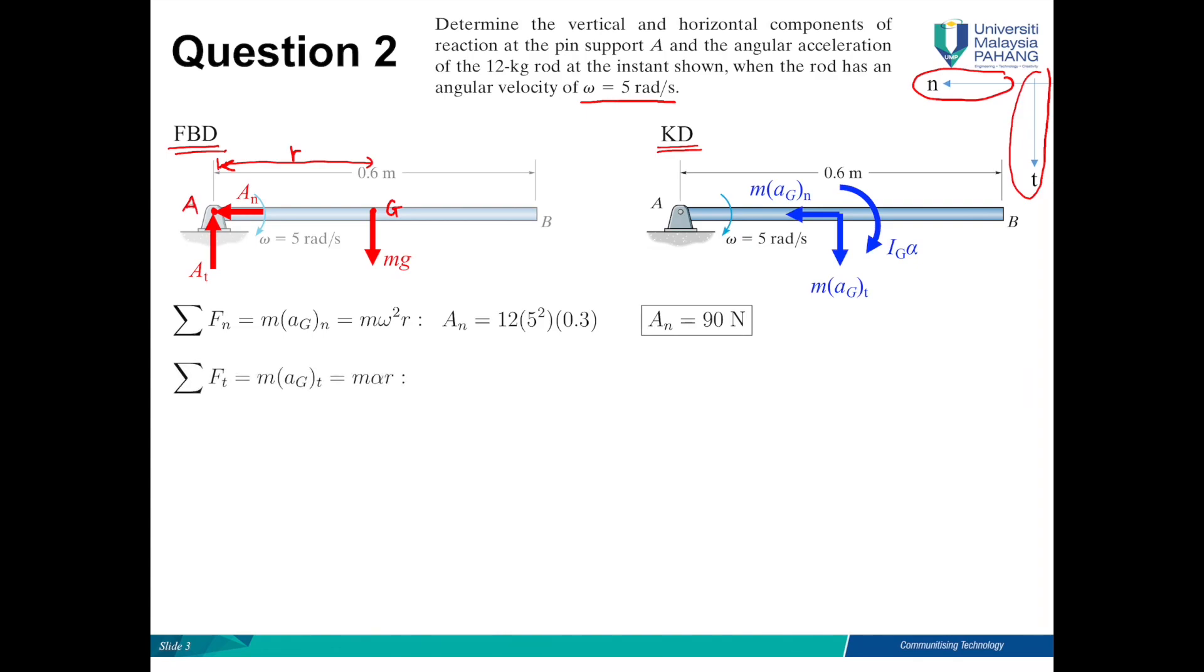Now we move on to the second equation. Sum of Ft equals M alpha R. We have minus At plus Mg equal to 12 alpha times R. So we have this equation: At plus 3.6 alpha equals 117.72. So we need the third equation to solve this problem.